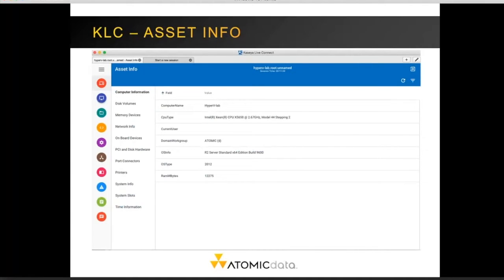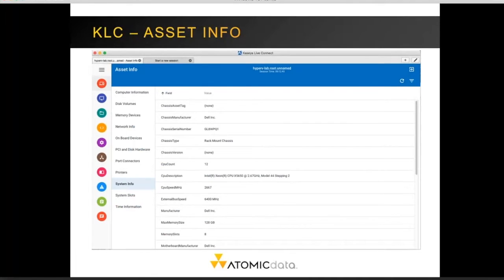The asset information tab shows information collected during the latest audit process, which runs every three days. There are tabs for computer information, disk volume information, network information, and general system information. That includes the chassis serial number, which is helpful for opening support requests with the manufacturer. It also shows the CPU count, the amount of memory installed, and the maximum memory size allowed.